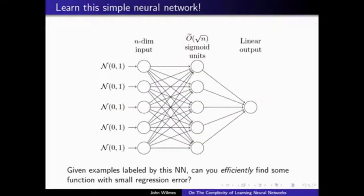Can we efficiently learn data generated by such networks? Here's the sort of network we might be talking about: n standard Gaussian inputs, not too many sigmoid units in the hidden layer, and a single linear output — about as nice and small a neural network as you might hope for. The question is whether you can efficiently learn the data generated by such a network. You can use whatever representation you want — you don't even need to use a neural network training algorithm. If you are using a neural network, you can use whatever depth, however many units, whatever architecture, loss function, or gradient descent variant you want.